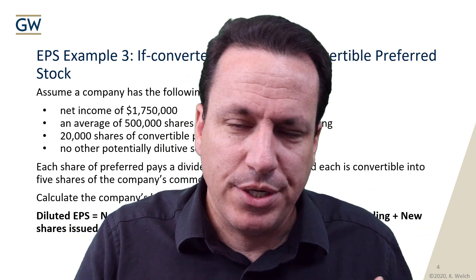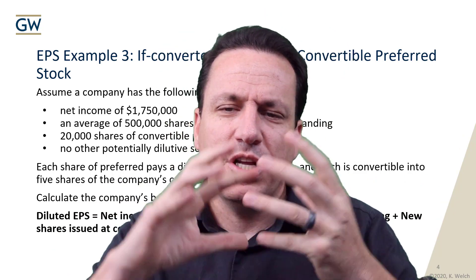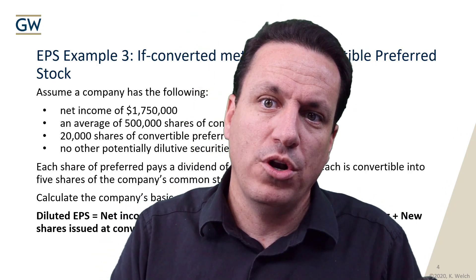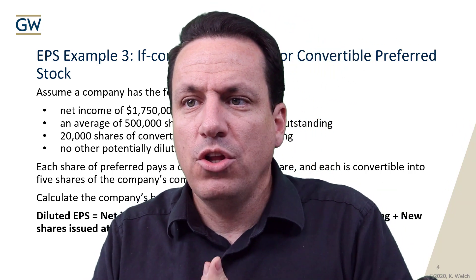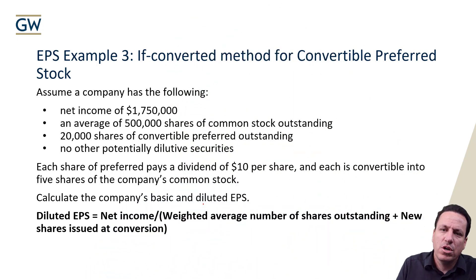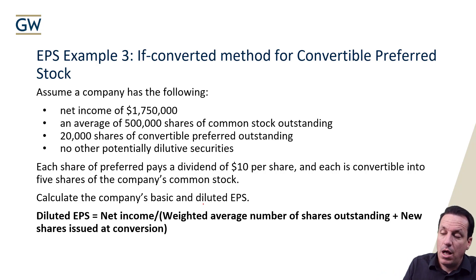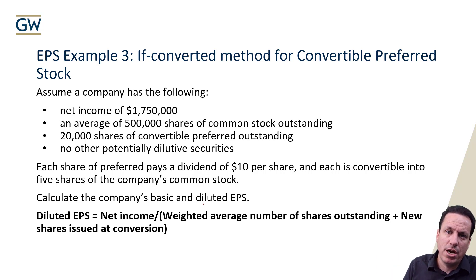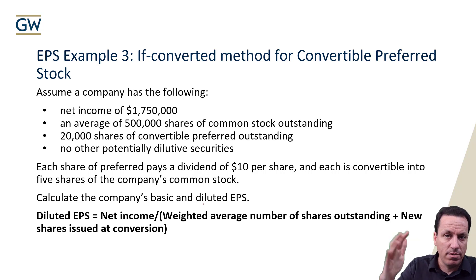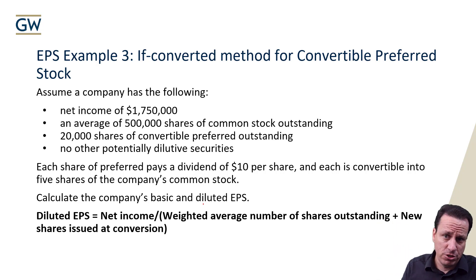Let's talk about a unique situation with EPS that's a little more complex. We're going to use the if-converted method for convertible preferred stock. Some of you might ask: is all preferred stock convertible? Not necessarily. The nice thing about preferred stock, bonds, and other instruments is they can be written to have certain features unique to them — for example, Facebook has senior shares with multiple voting rights. So in this example, we're going over earnings per share for convertible preferred stock.